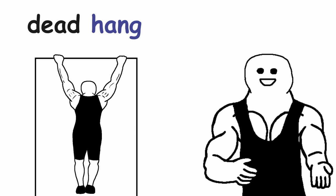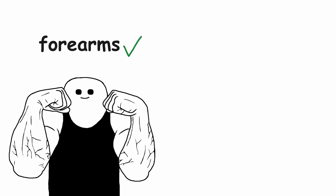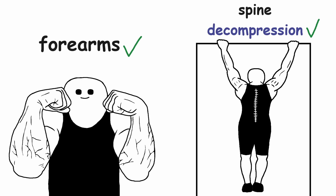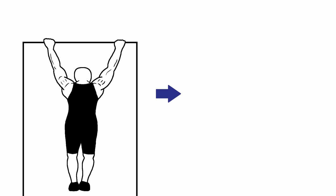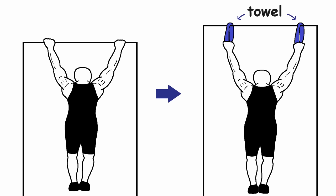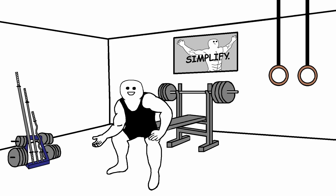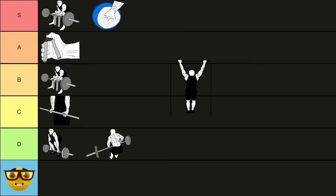Next exercise is the dead hang. This exercise is not only great for your forearms, but also for decompressing your spine. And if you want to increase the difficulty of the exercise, you can add in a towel. If you have never tried dead hangs, I highly recommend you to do so. The dead hang is going into the A tier.